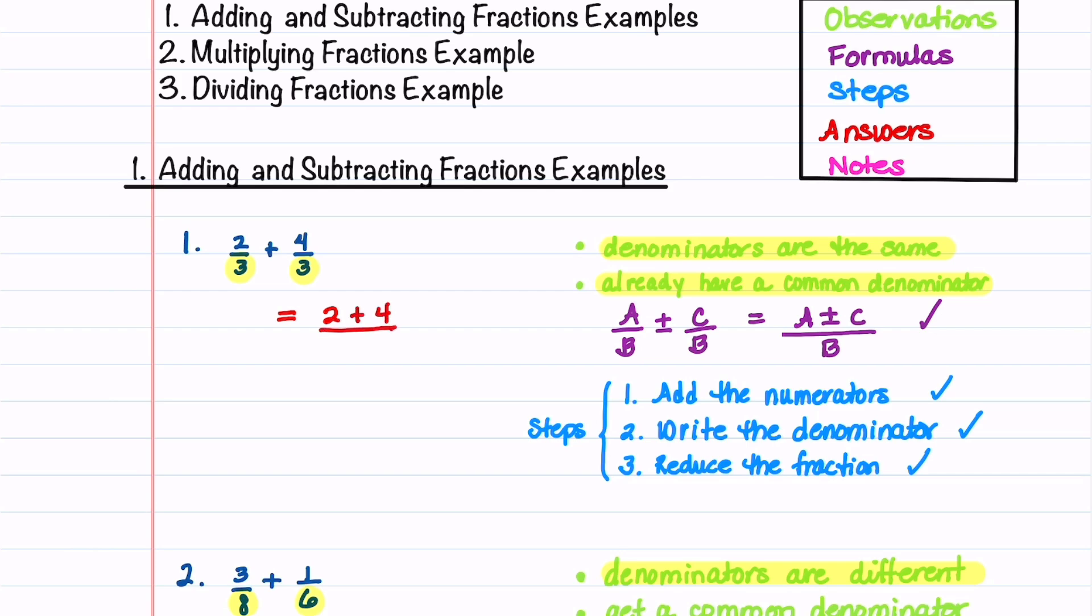We'll write down the denominator, which is 3. 2 plus 4 is then 6. We divide that by 3, and then we reduce that fraction to a value of 2. And that's our final answer.